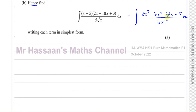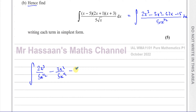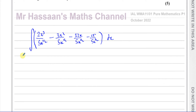The next stage now is to split it up into separate terms. So what I'm going to do now is write this as: 2x cubed over 5x to the power of a half, minus 3x squared over 5x to the power of a half, minus 32x over 5x to the power of a half, and minus 15 over 5x to the power of a half. All of this has to be integrated with respect to x. So now we need to simplify these terms to write them as single x terms, and then we can integrate them.